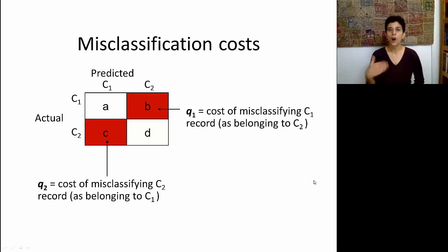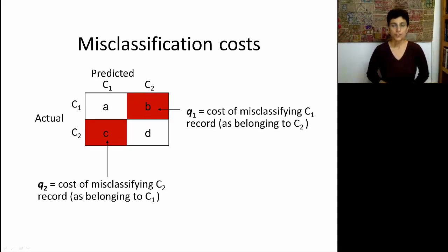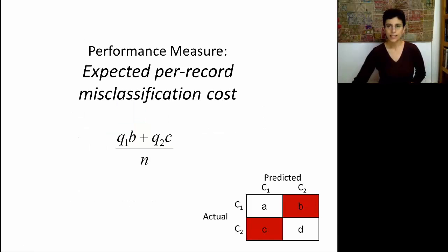So an obvious measure of cost is going to take the cost times the number of records that we misclassified. A natural way to aggregate these numbers into an overall cost is by taking the ratio of the costs, Q1 and Q2, multiplied by the number of records that were misclassifications of those types, and dividing it by the sample size so that what we get is an expected per-record misclassification cost. This means that if we deploy this algorithm to new data, each new record that we deploy it to incurs the average cost of this amount.